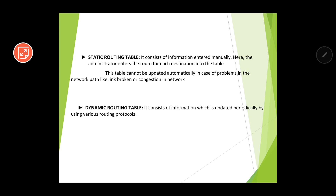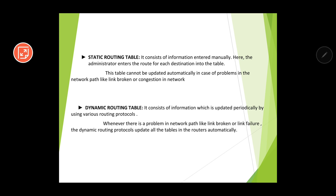The second type is a dynamic routing table. It consists of information updated periodically using various routing protocols, and it has the ability to update itself automatically. There are certain algorithms — beyond the scope of this level — that help select the best path at each instance. The table can change dynamically based on situations like traffic congestion, with no human involvement required.